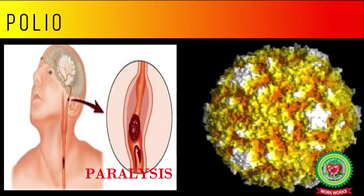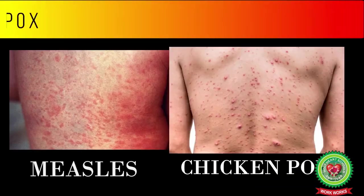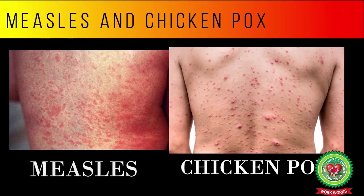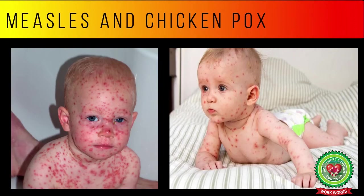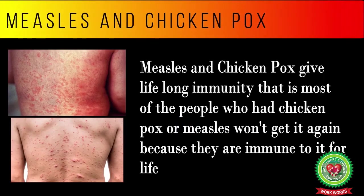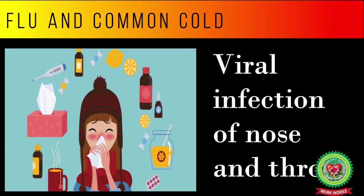Polio is a virus that may cause paralysis. Measles and chickenpox are viral infections that affect small children. They give lifelong immunity — that is, most people who had chickenpox or measles won't get it again because they are immune to it for life. Flu and common cold are viral infections of the nose and throat.